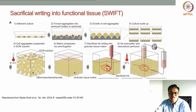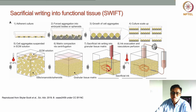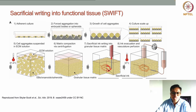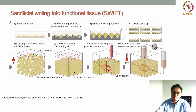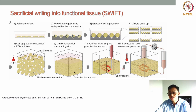Gelatin was used as the sacrificial ink material because it is also thermoreversible — below 30°C it behaves as a gel. The gelatin was printed at lower temperature where it remained intact as a gel. The mixture of embryoid bodies in Matrigel acts as the support bath, while the gelatin bioink is used to create any kind of vascular network structure within this tissue bed.